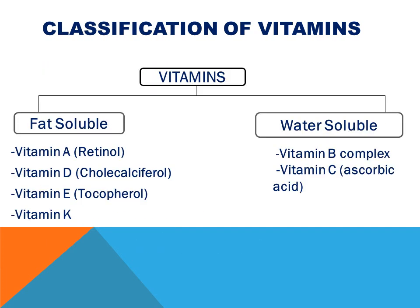There are two types of vitamins. Fat soluble vitamins include: Vitamin A, whose chemical name is retinol; Vitamin D, whose chemical name is cholecalciferol; Vitamin E, whose chemical name is tocopherol; and Vitamin K. The next category is water soluble vitamins, which include all B complex vitamins and Vitamin C, also known as ascorbic acid, which is present in citrus fruits.